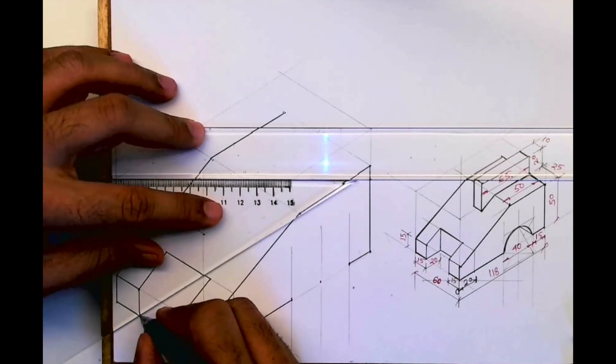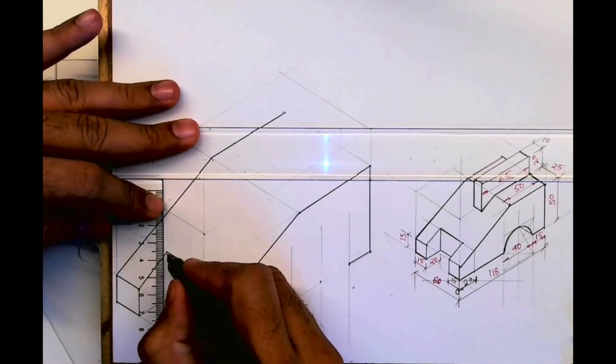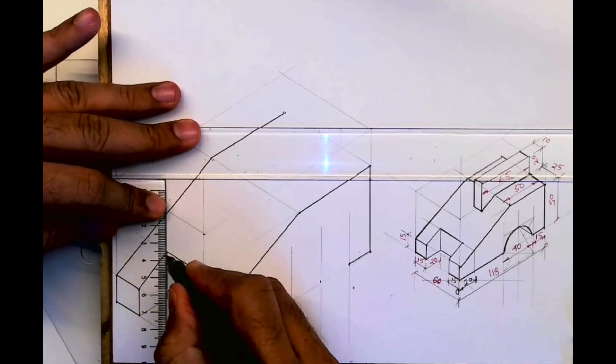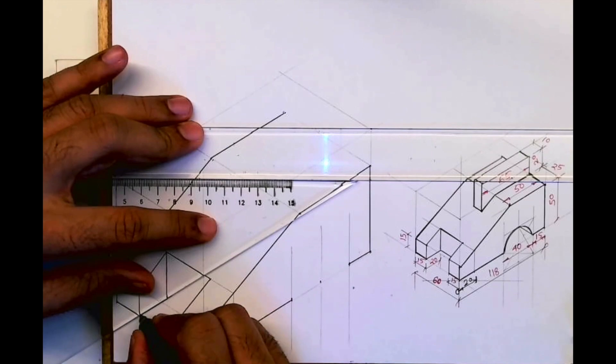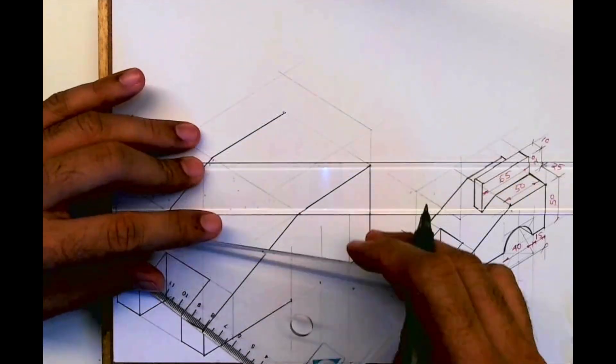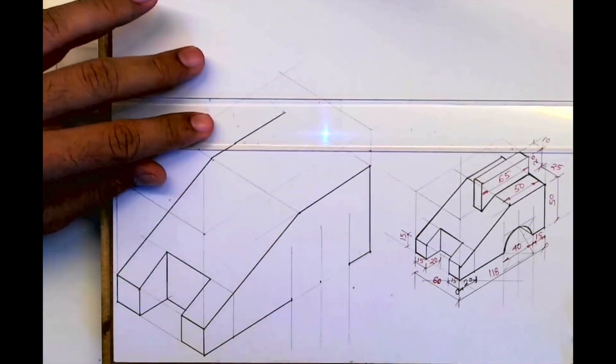Then you extend the line from here, and you extend the line vertical from here. So this is what you will get.